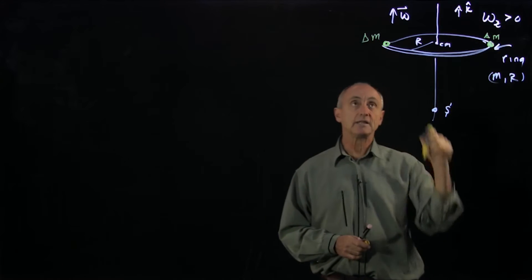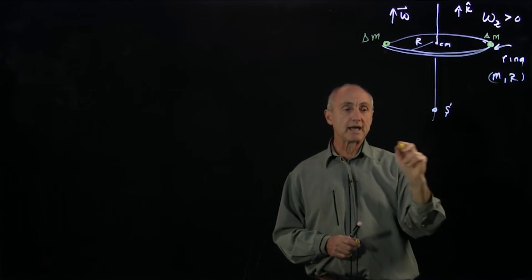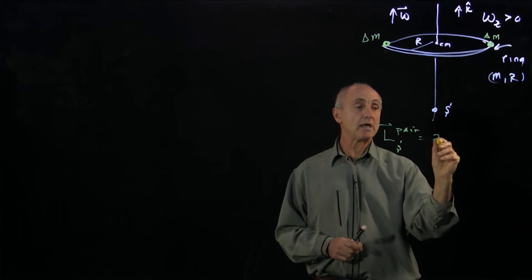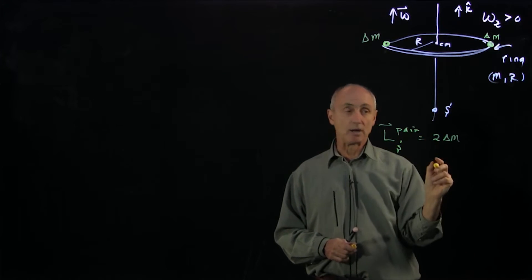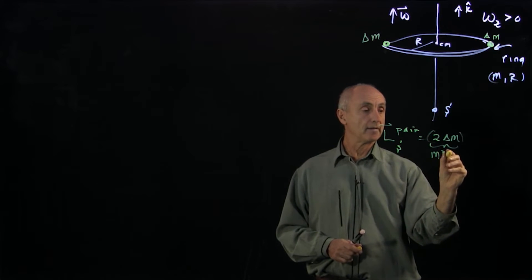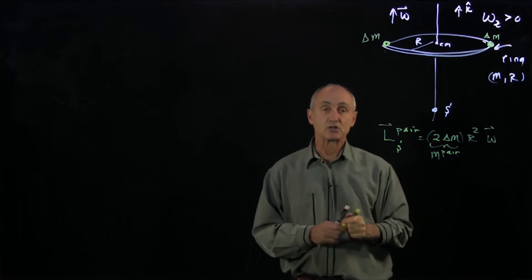And we're going to calculate the angular momentum first of that pair. Well, we've already made that calculation, that the angular momentum about s of the pair is twice the mass of each object. That's the mass of the pair times r squared, and it points in the omega direction.